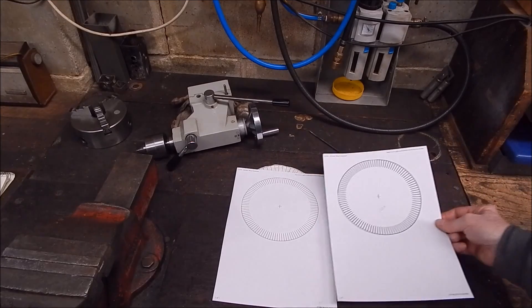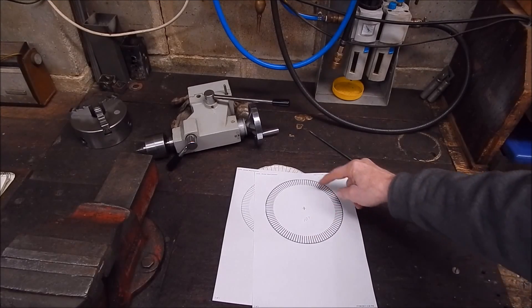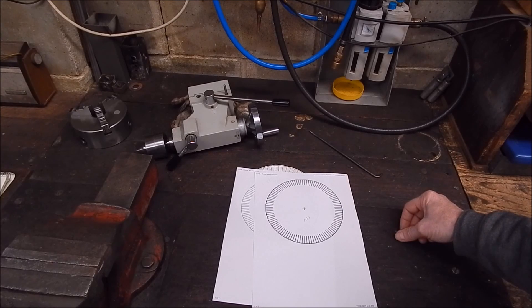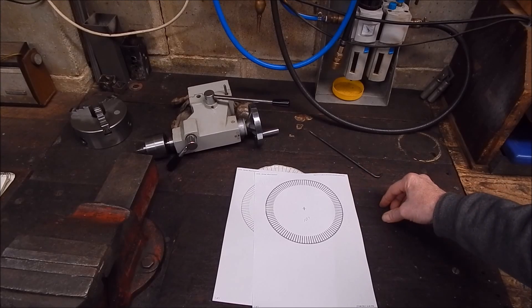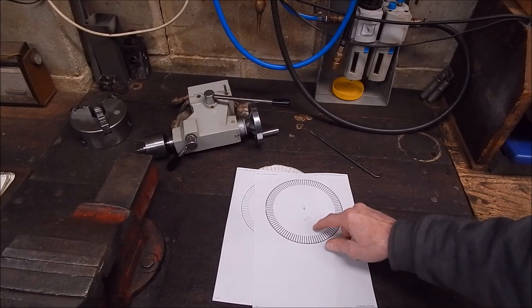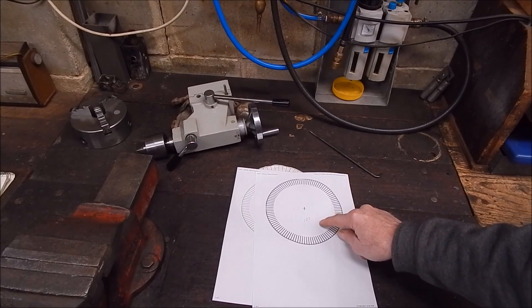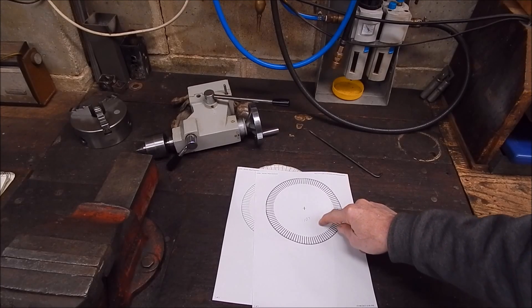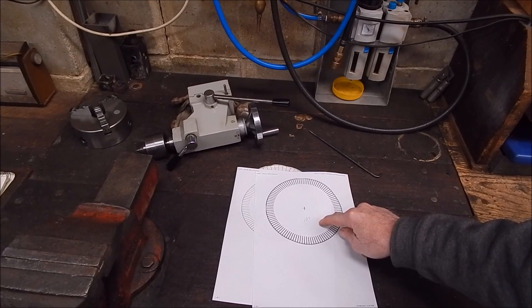You can also vary the thickness of the segments, the lines, and that just makes it easier to align with a pointer. In this case this is a disk for 107 teeth. Now anybody that's got a dividing head will know that 107 teeth, not many dividing heads have disks that will do 107 teeth.